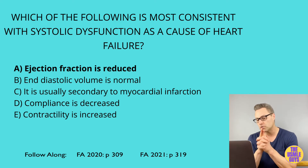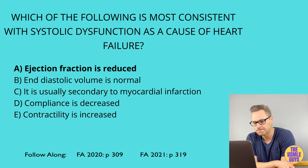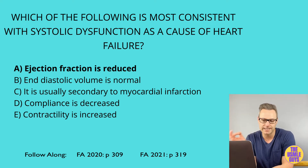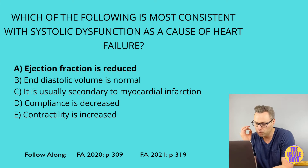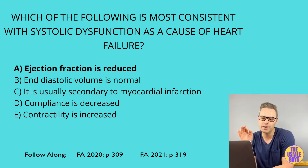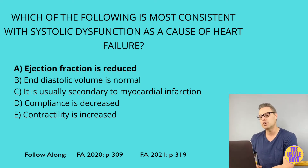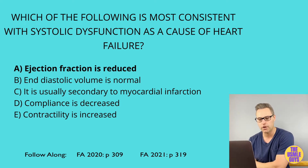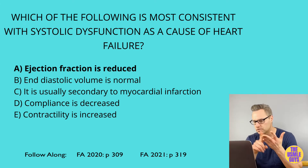The most common cause of right-sided heart failure is, of course, left-sided heart failure. If right-sided heart failure is the result of a pulmonary issue, that's known as cor pulmonale. Certain drugs can help to decrease the mortality associated with heart failure, including ACE inhibitors, ARBs, beta-blockers, and spironolactone.